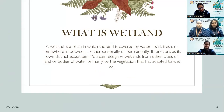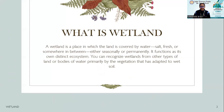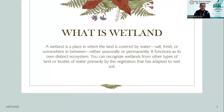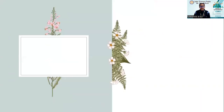What is a wetland? A wetland is a place in which the land is covered by water — salt, fresh, or somewhere in between — either seasonally or permanently. It functions as its own distinct ecosystem. You can recognize wetlands from other types of land or bodies of water, primarily by the vegetation that has adapted to wet soil.